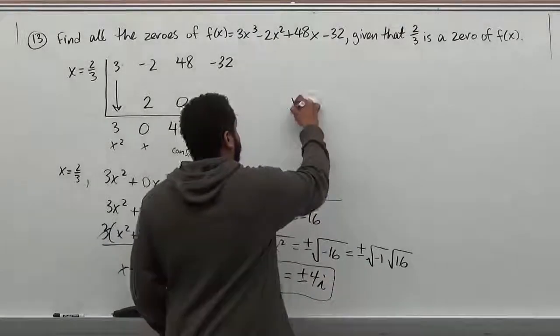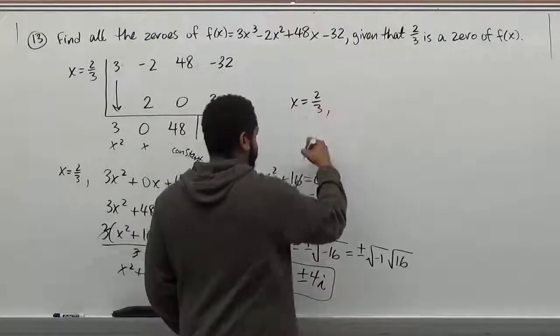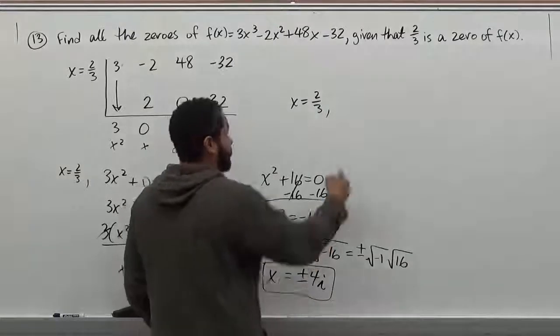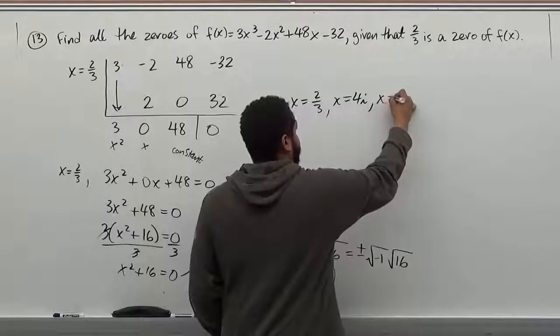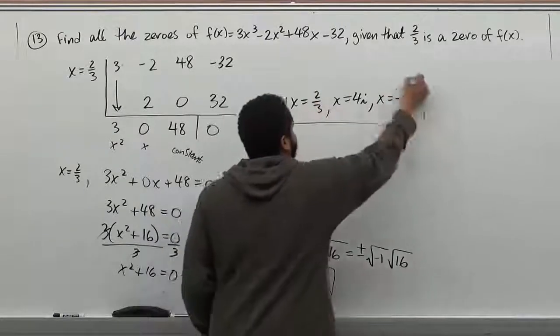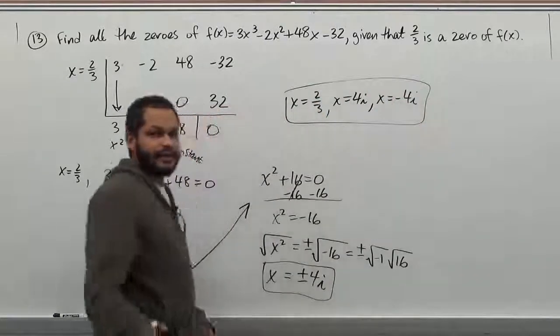So our three terms then are x = 2/3, x = 4i, and finally x = -4i. Thank you.